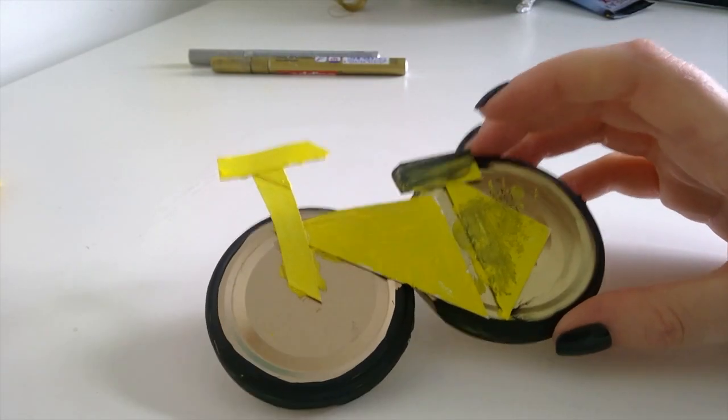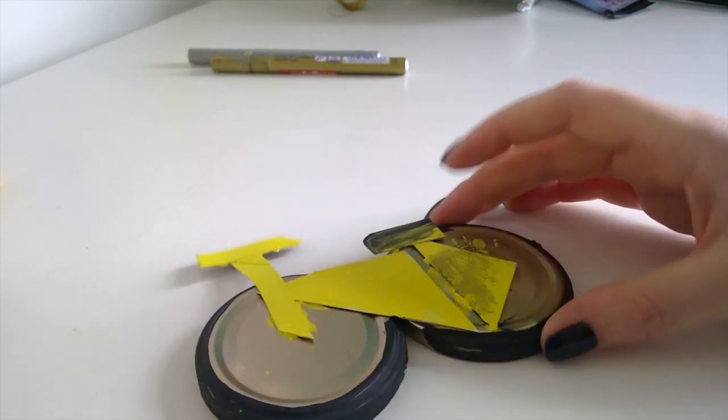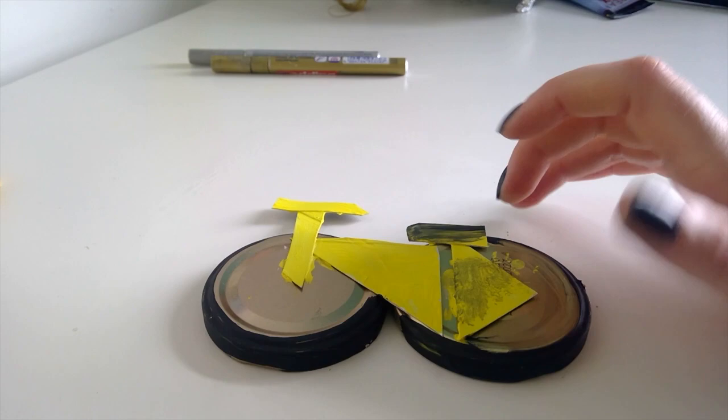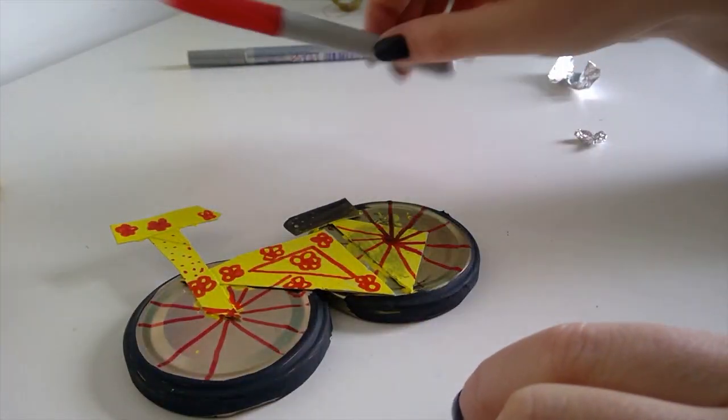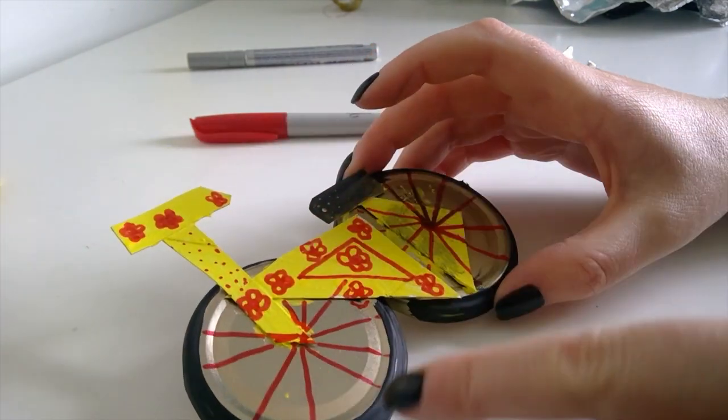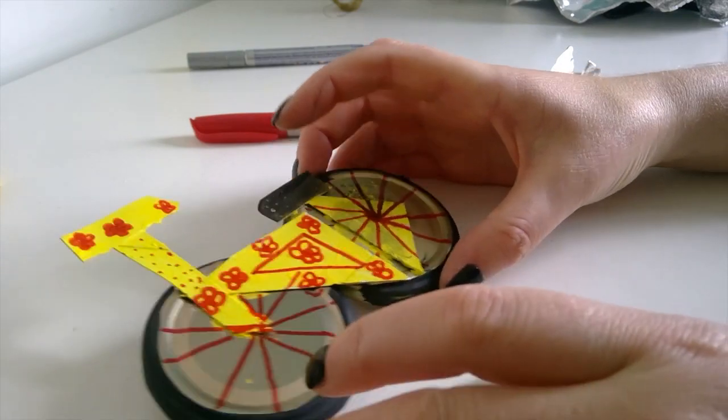Okay. There we have the layer one paint. Now I'm just gonna add some more detail. Just put down whatever colors you like. I just added on with a sharpie some little decoration. I just put some little random flowers all over and some spokes. And it only takes a couple of minutes to do. It's really good fun.